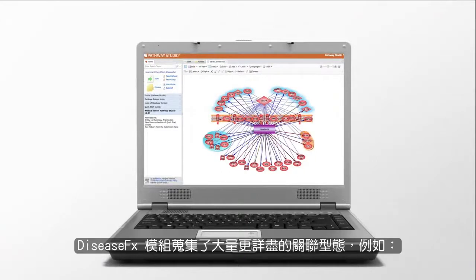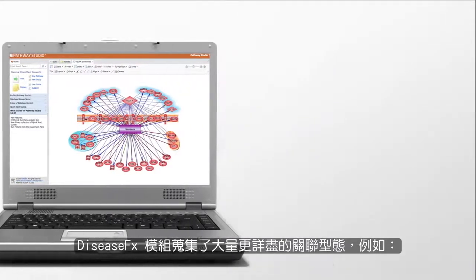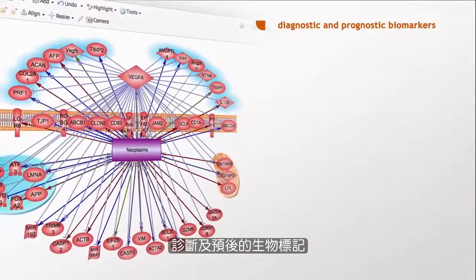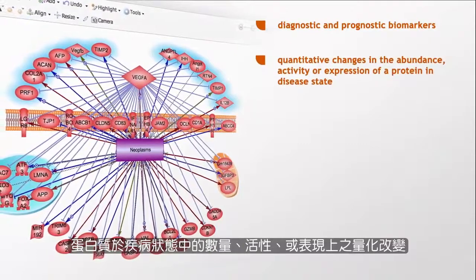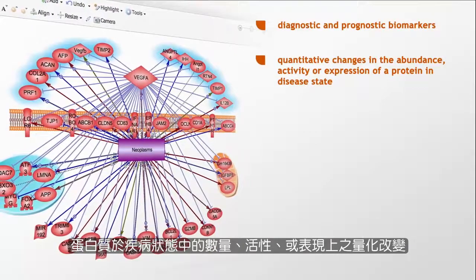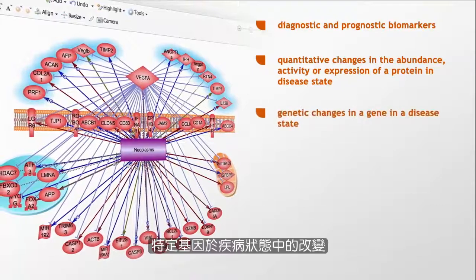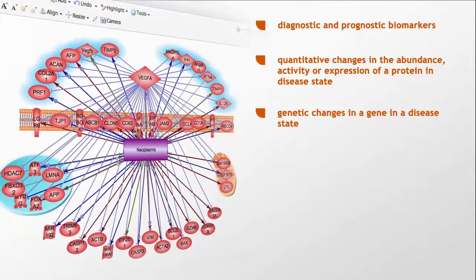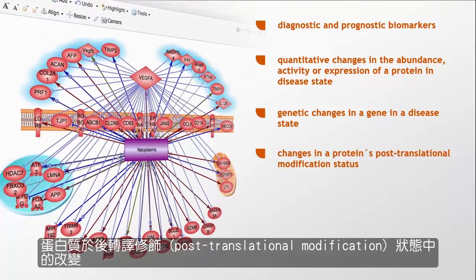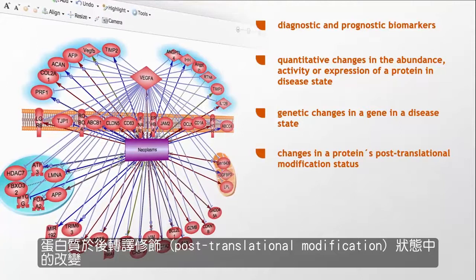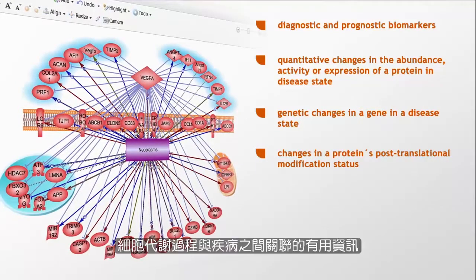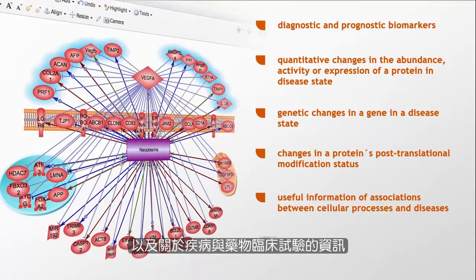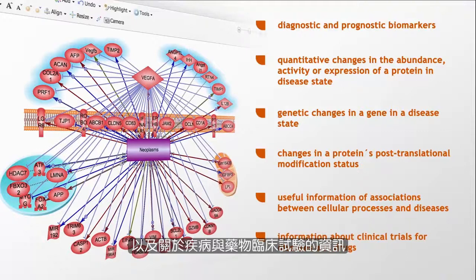The DiseaseFX database contains a rich collection of more detailed relation types such as diagnostic and prognostic biomarkers, quantitative changes in the abundance, activity or expression of a protein in disease state, genetic changes in a gene in a disease state such as amplifications, mutations or deletions, changes in a protein's post-translational modification status such as phosphorylation or splicing, useful information of associations between cellular processes and diseases, and information about clinical trials for diseases and drugs.